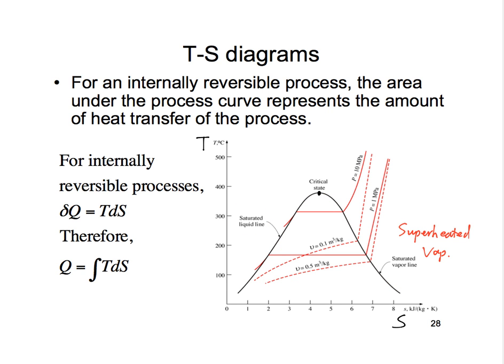We need to learn how to draw process lines on the TS diagram. It's very often that we draw an isentropic process on the TS diagram. For an isentropic process, the process line should be a vertical line.